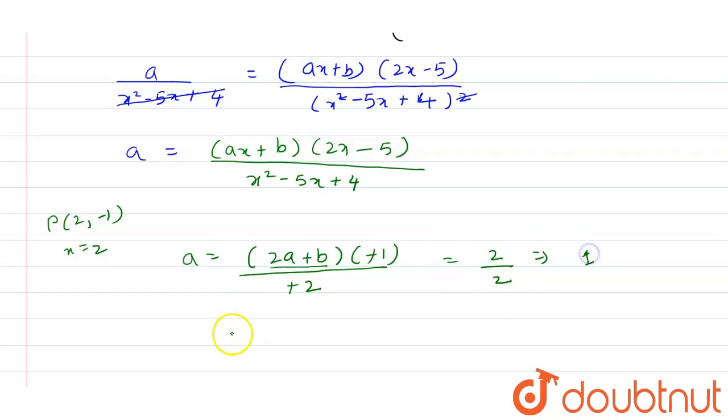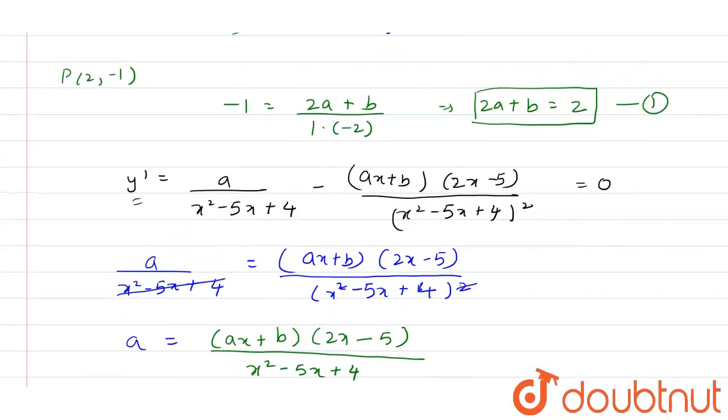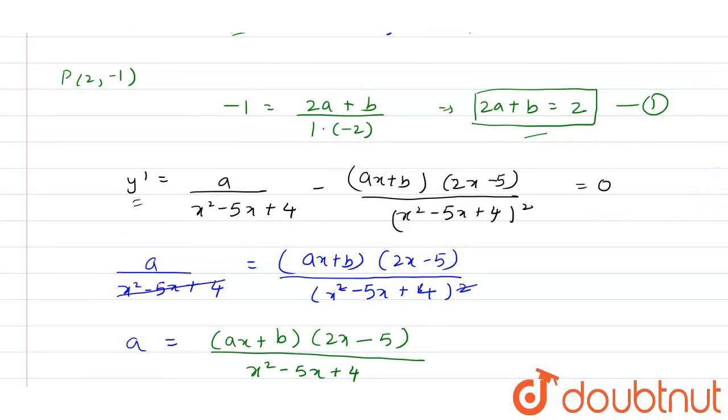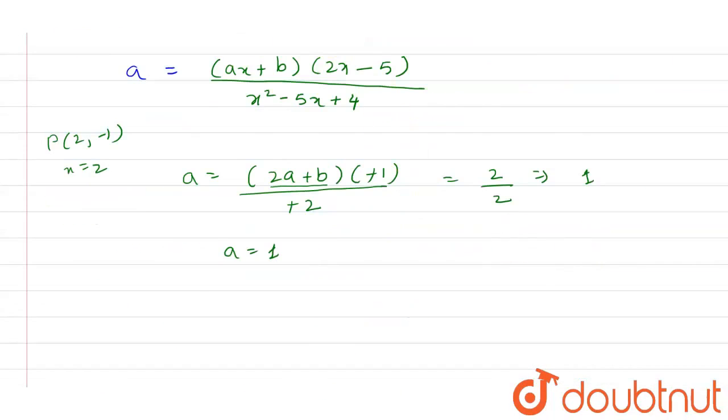And from equation number 1, that is 2A + B = 2, by putting the value A = 1, we get B = 0. So these are the values of A and B.